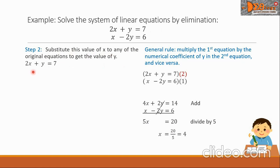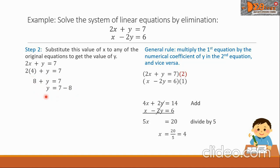We choose the first equation: 2x plus y equals 7. Substituting x equals 4, we have 2 times 4 plus y equals 7. This gives 8 plus y equals 7. Transposing 8 to the right side changes its sign, so y equals 7 minus 8, which equals negative 1. Writing X and Y as an ordered pair, the solution is (4, negative 1).